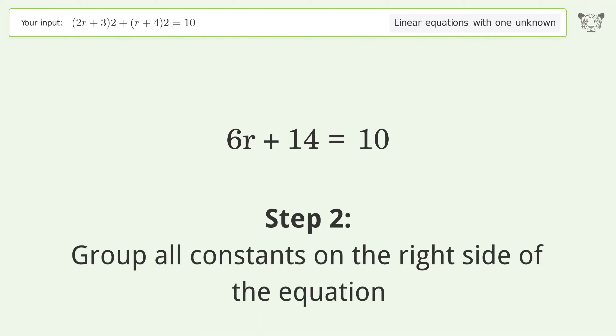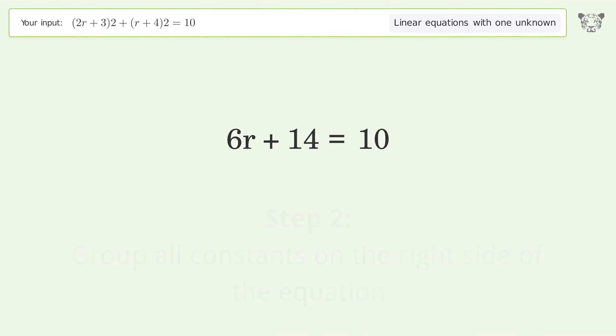Simplify the arithmetic. Group all constants on the right side of the equation. Subtract 14 from both sides. Simplify the arithmetic.